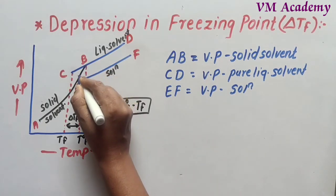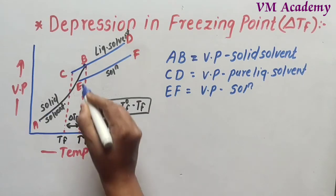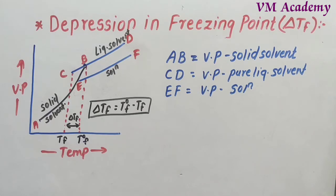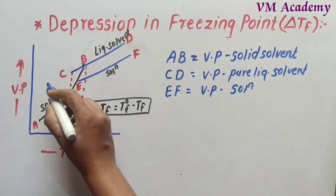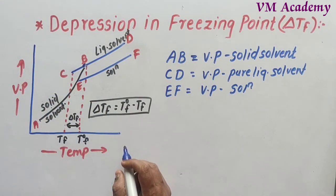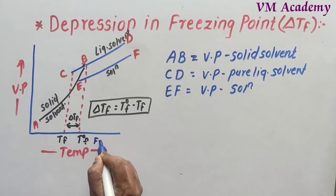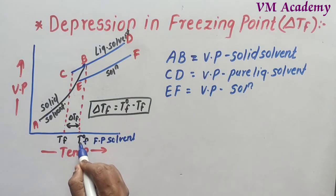Curves AB and CD intercept at point B. At point B, the solid phase and pure liquid solvent have the same vapor pressure — they are at equilibrium. A dotted line from B to the temperature axis gives T-naught-F, which is the freezing point of the pure solvent. When the two curves intercept and equilibrium is reached — when vapor pressure is the same — that temperature is the freezing point of the solvent, denoted T-naught-F.